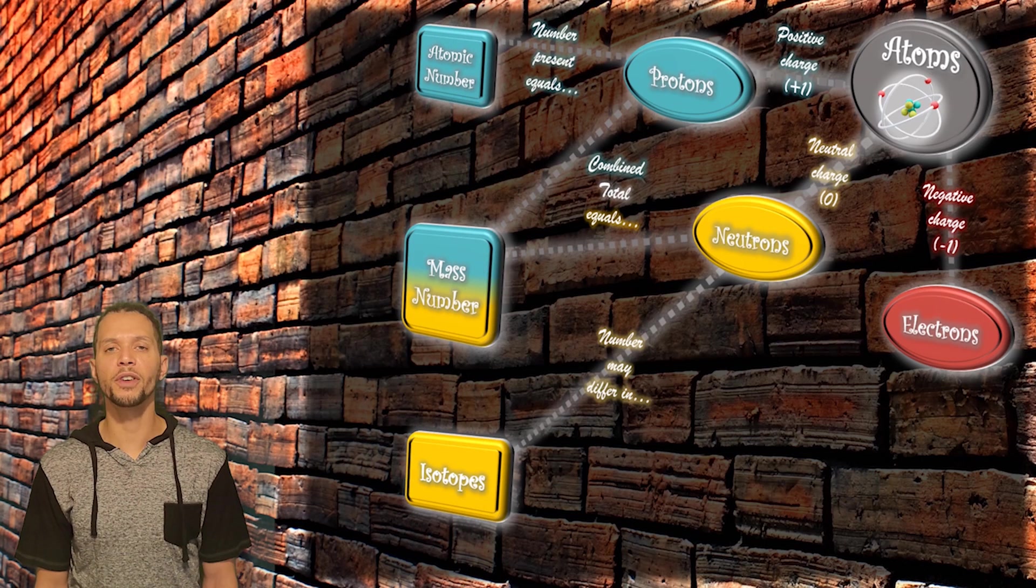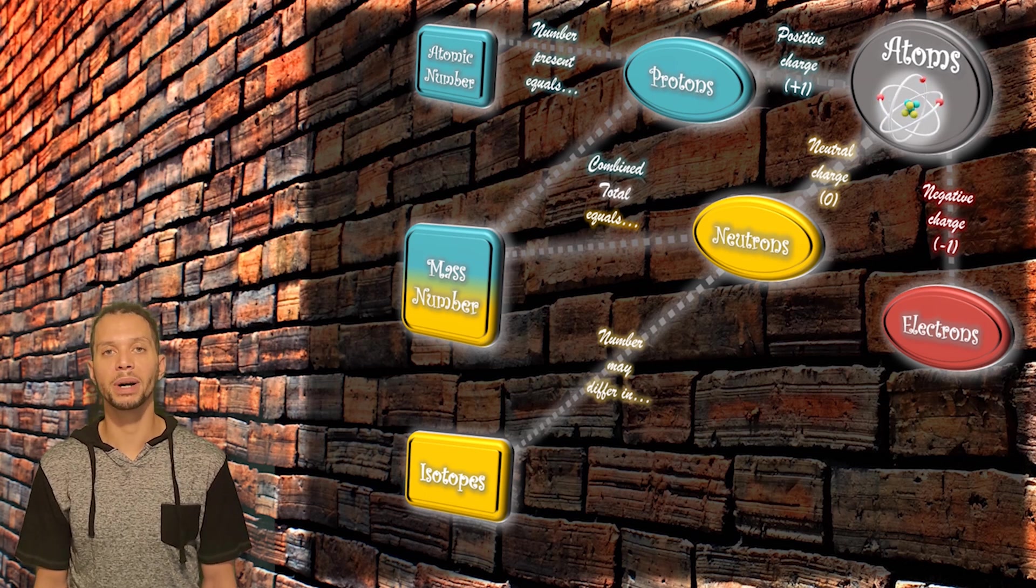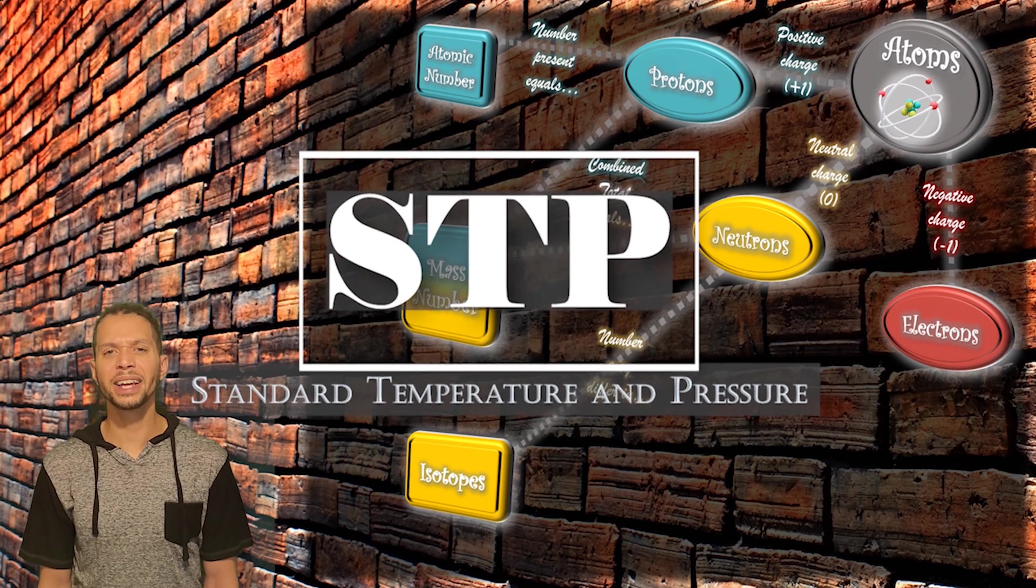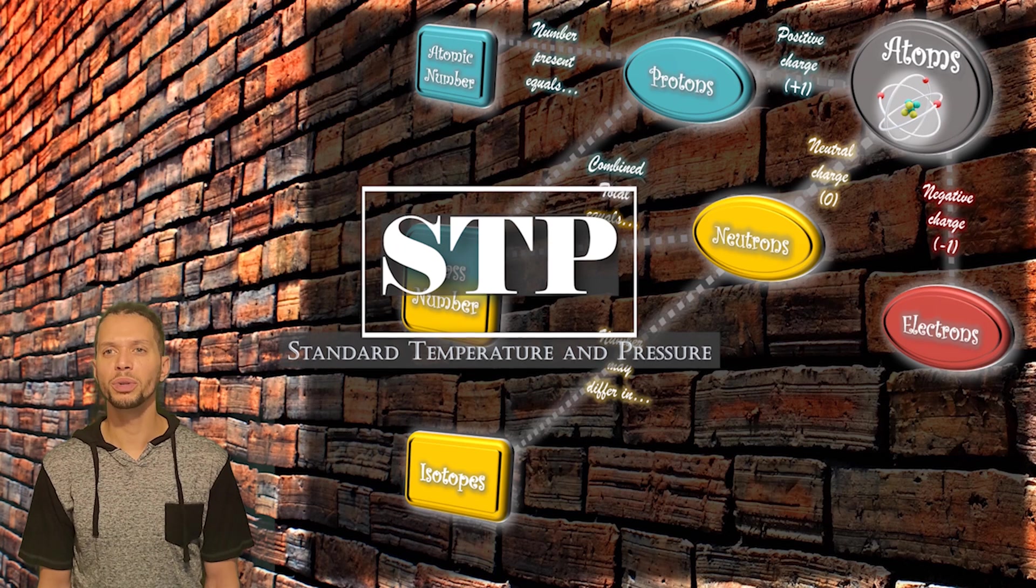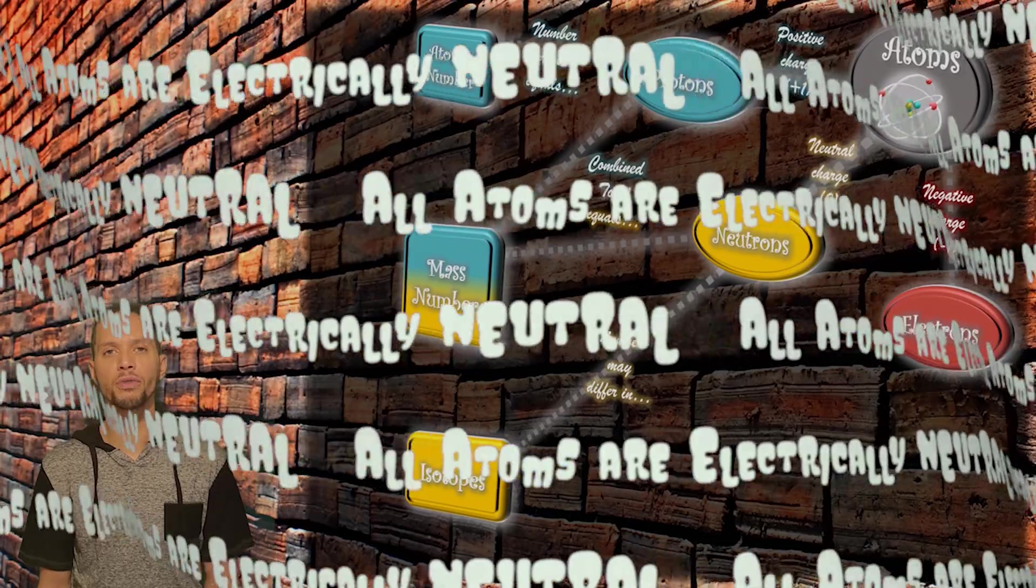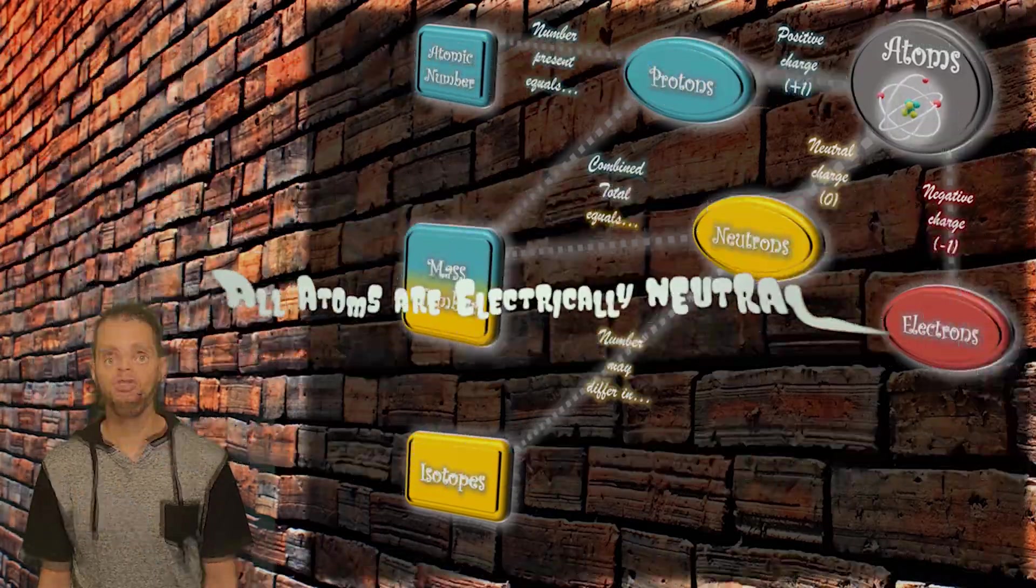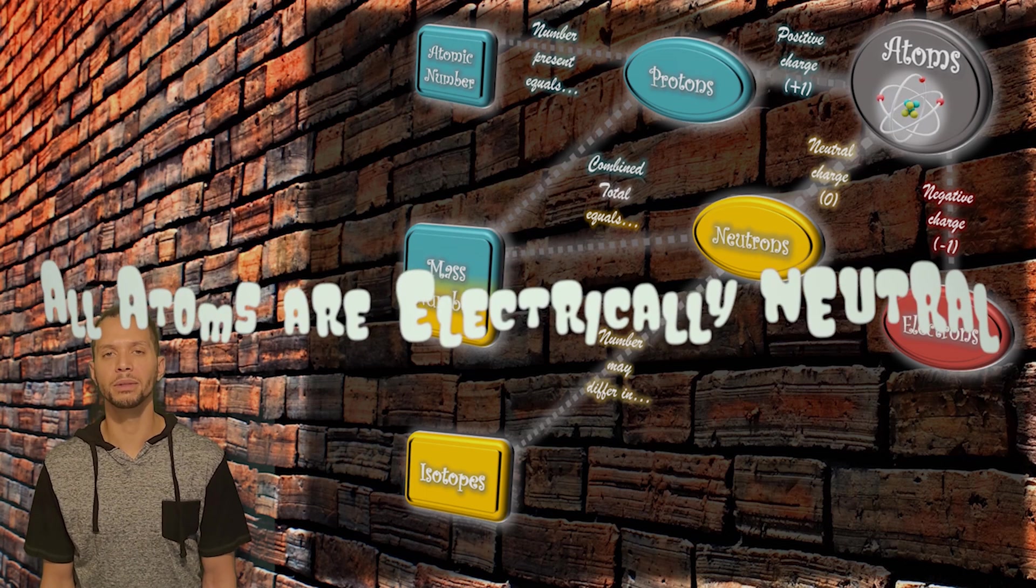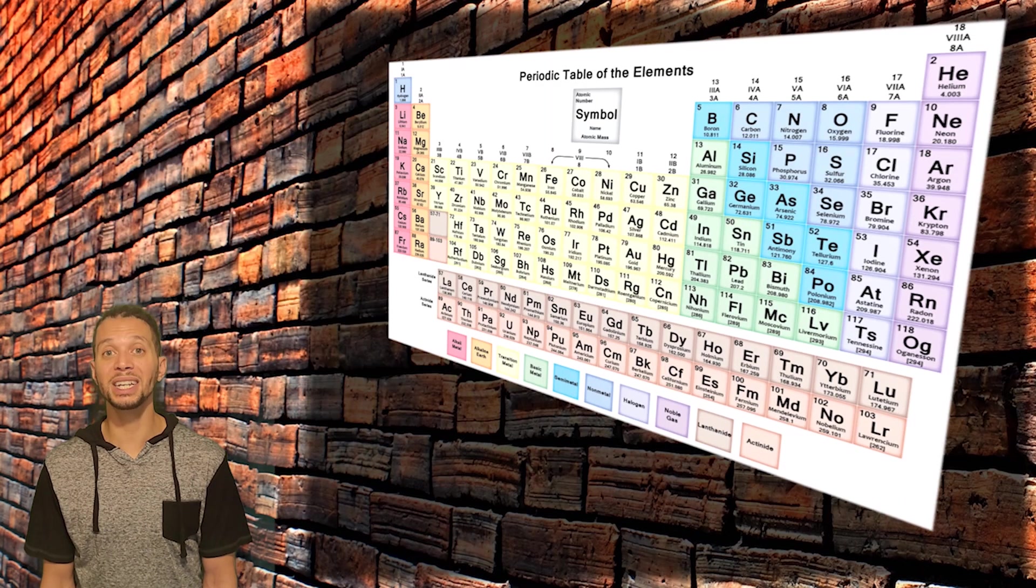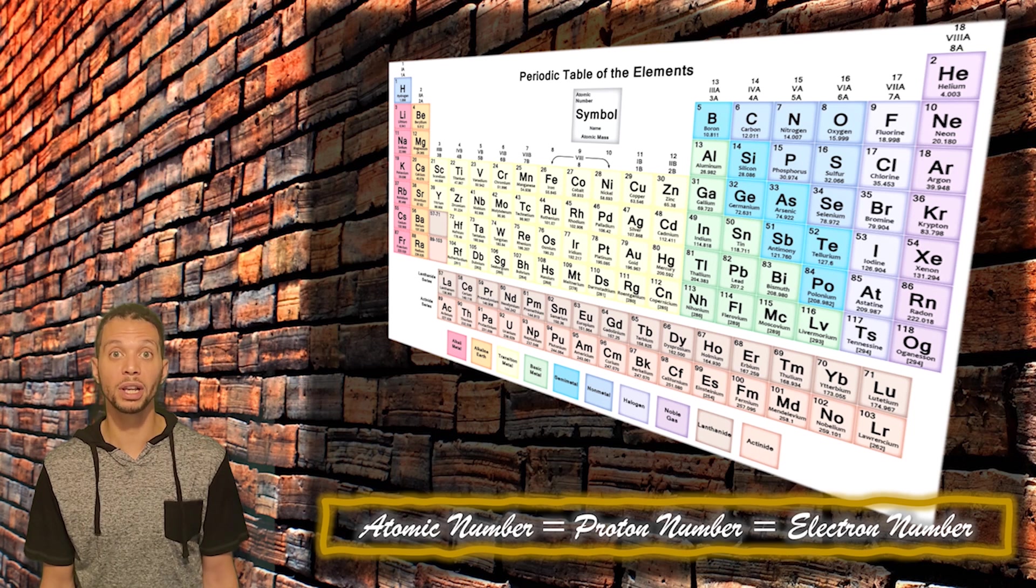The last piece of understanding atomic structure is based on those electrical charges that we talked about in the protons and electrons of an atom. At standard temperature and pressure, or STP, which is just the natural environment of our planet, atoms are stable with an overall neutral electrical charge of zero. So in the stable neutral form of our elements, which is the one that is represented on the periodic table, there will always be equal numbers of the positively charged protons and negatively charged electrons.